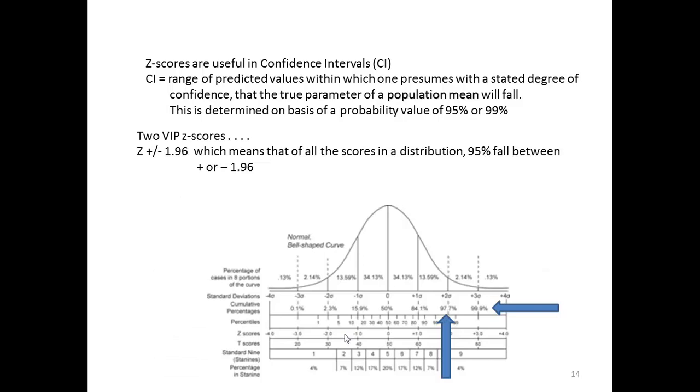There are two very important Z-scores to remember. A Z address of 1.96 and a Z address of 2.58 along that X-axis. A Z of 1.96 means that all the scores in a distribution, 95% will fall between plus or minus 1.96. If the Z-score is 2.58, this means all the scores in a distribution, 99% will fall between plus or minus 2.58.